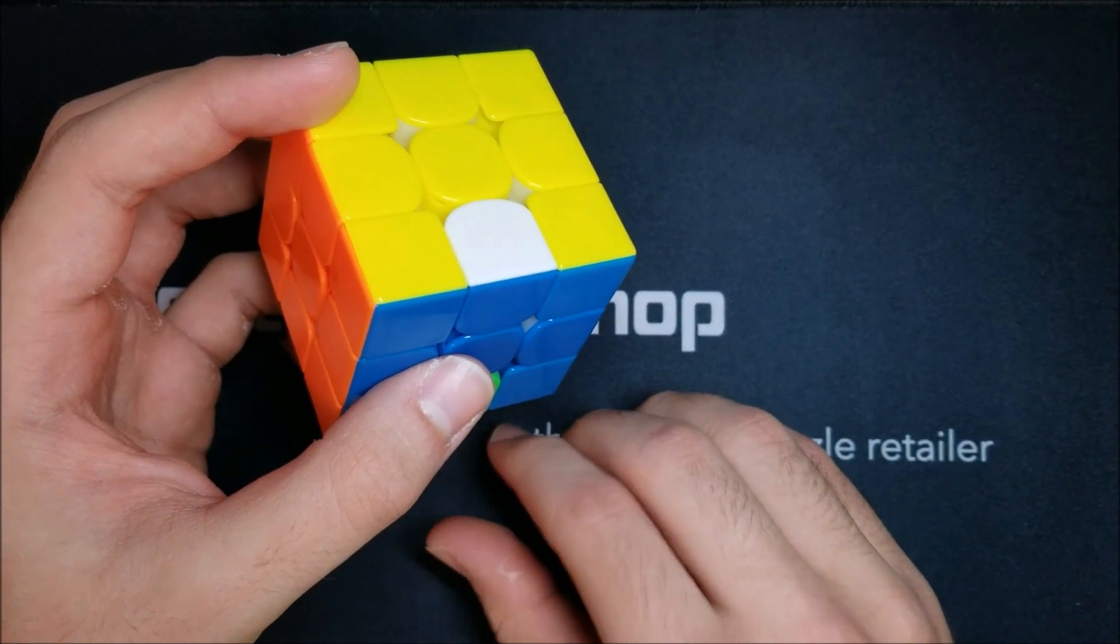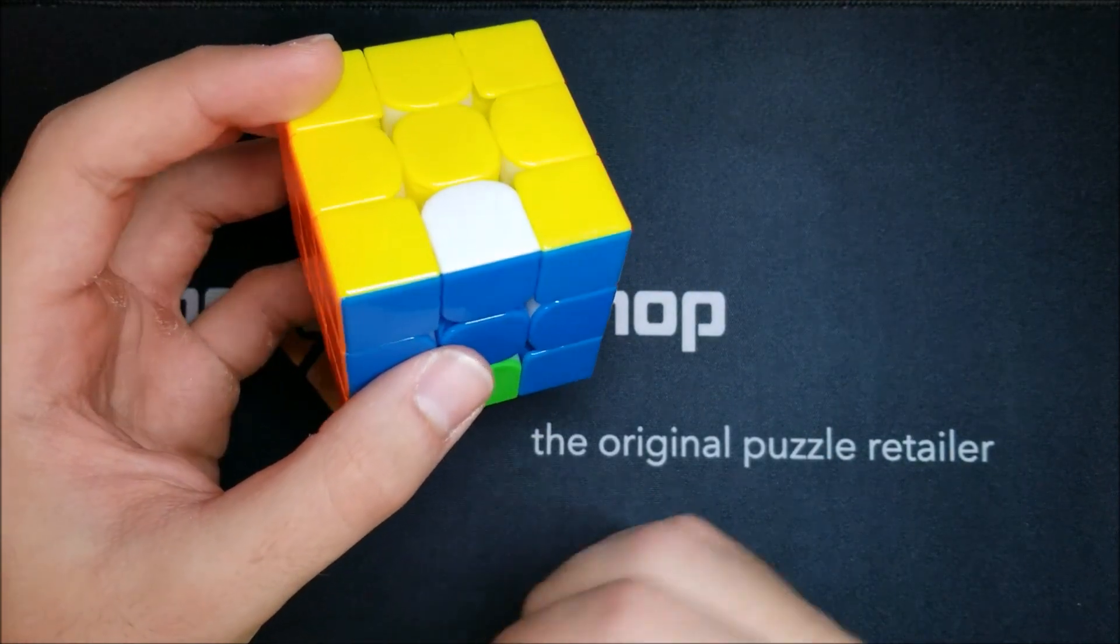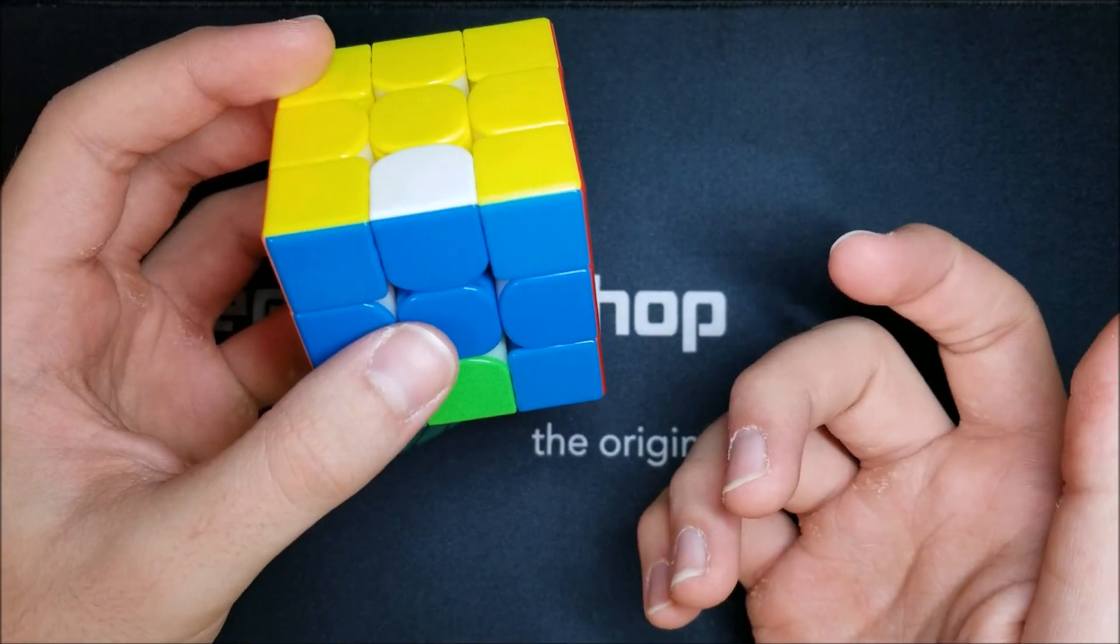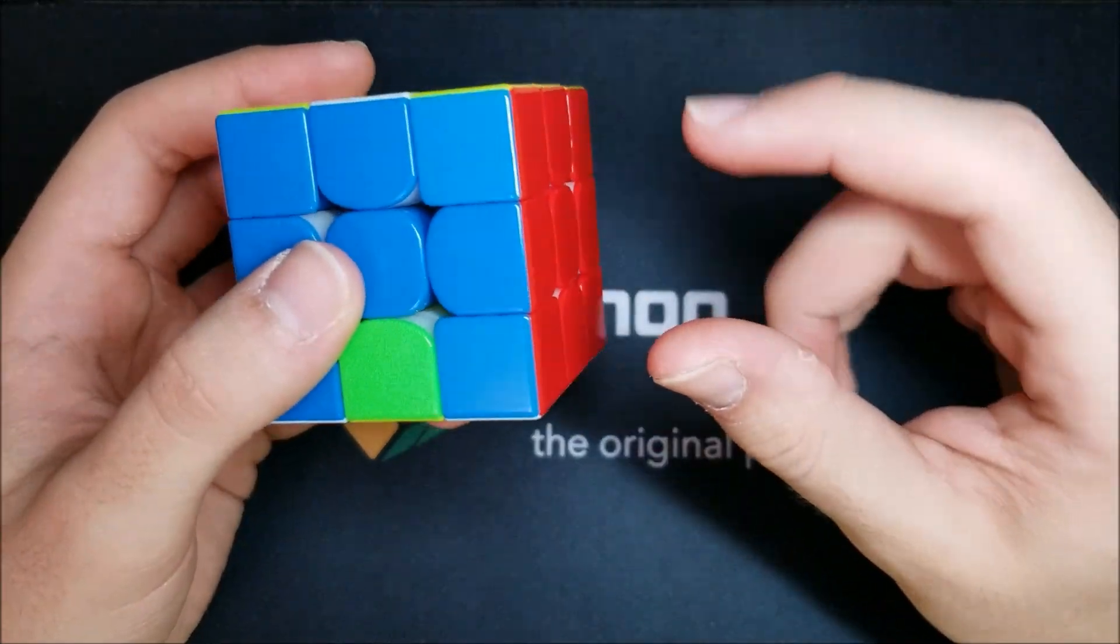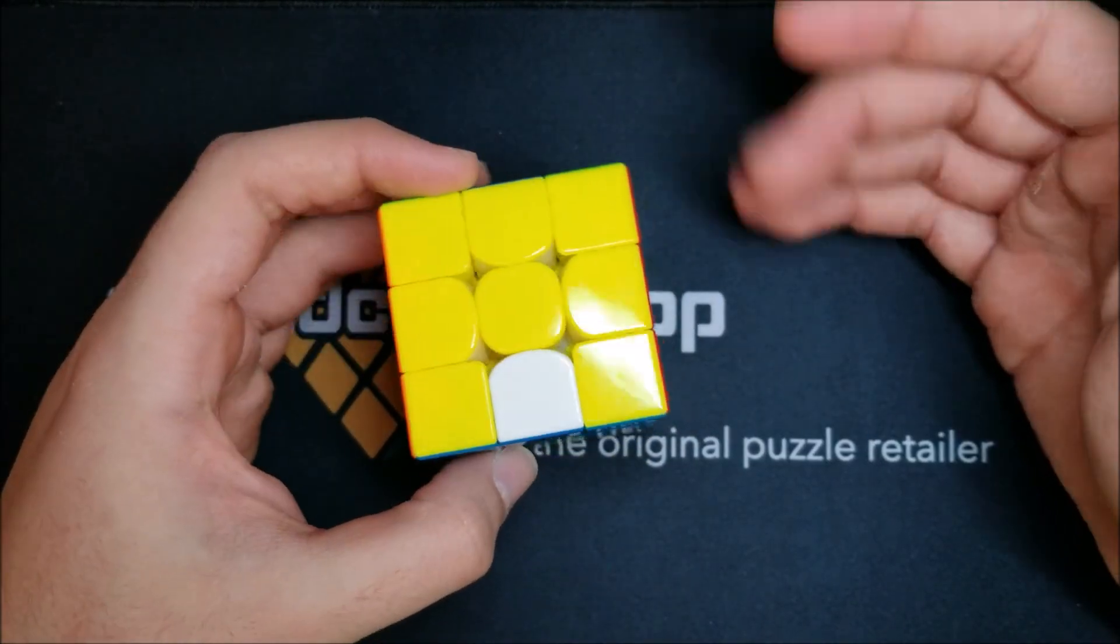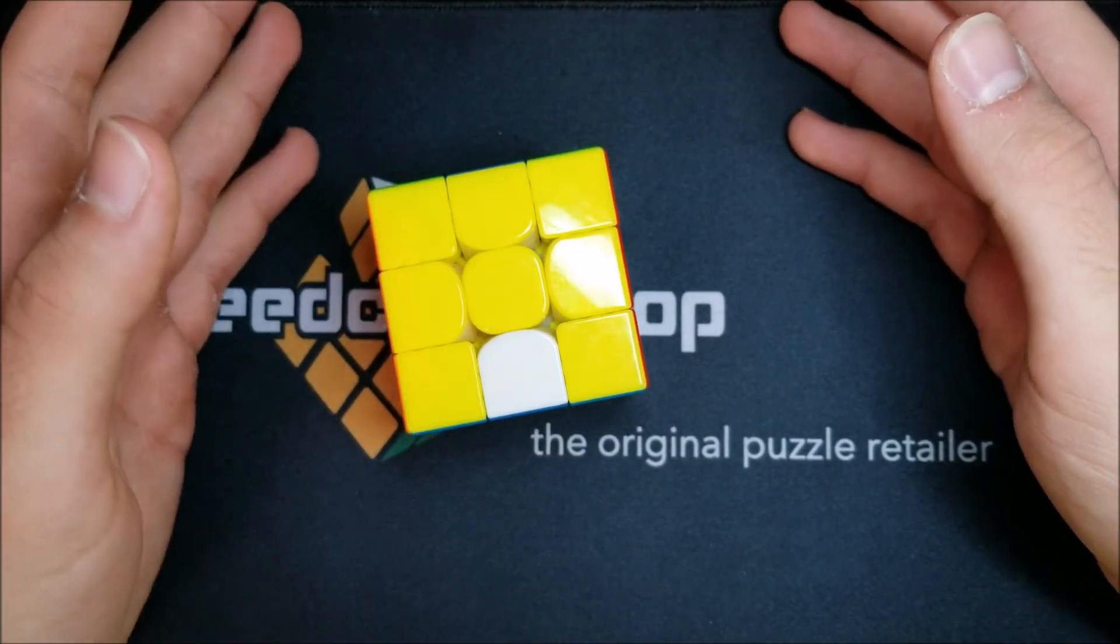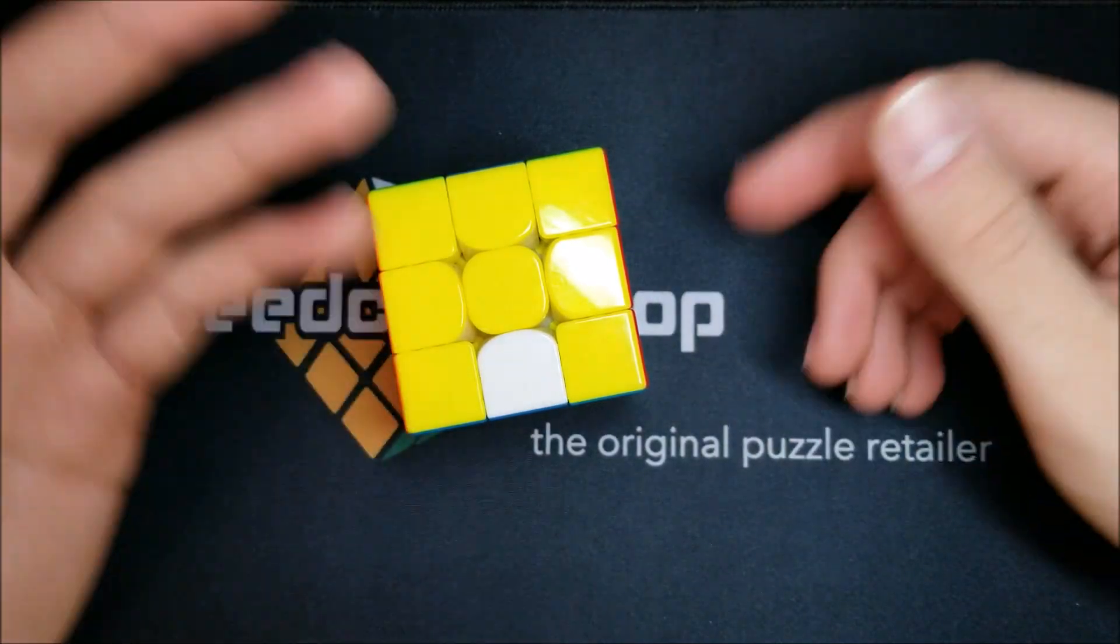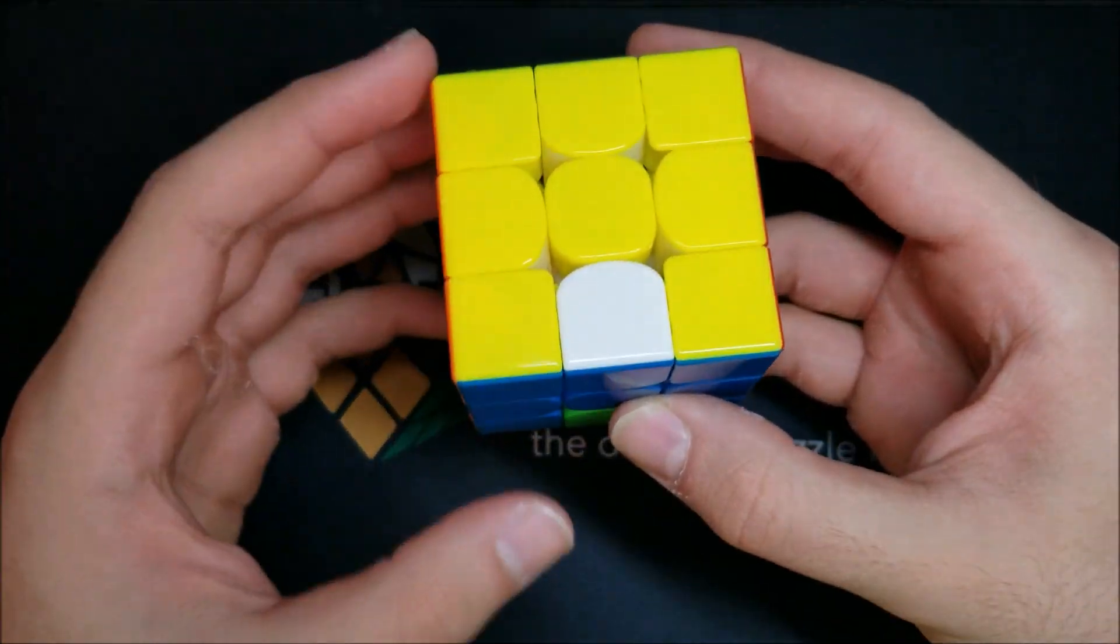Then after that whole week is over, I'll start on Monday and I'll pick another part of my solve to do partial speed blind. So say now I want to work on CMLL prediction, so then I'll start doing last slot plus CMLL. Do that for a week, same way, just do 50 solves of it before my standard 3x3 session and move on to something else.